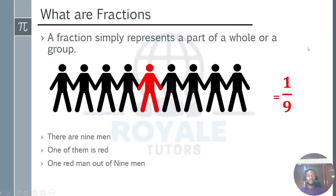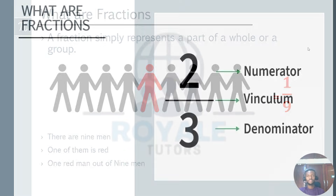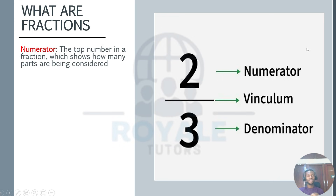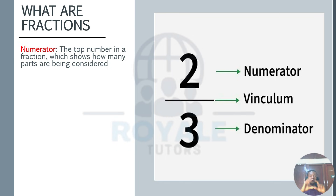Now let's look at the description of a fraction. A fraction has the upper part — the top part — which is also called the numerator. The upper part is called the numerator. Looking at the example we used in the previous slide, the upper part, which is the only considered number — which is the red man — is one out of nine. So that one becomes the numerator.